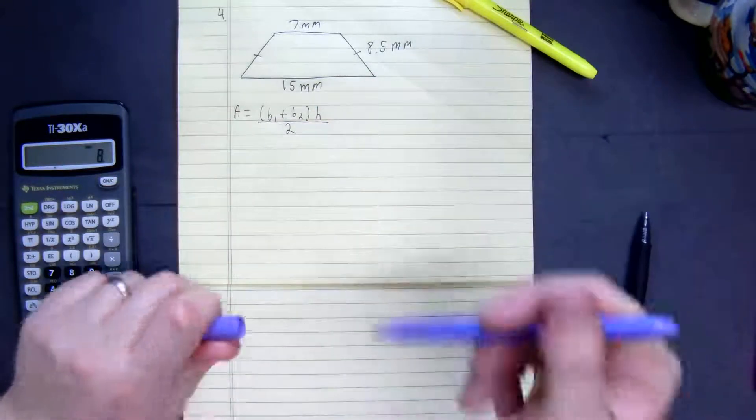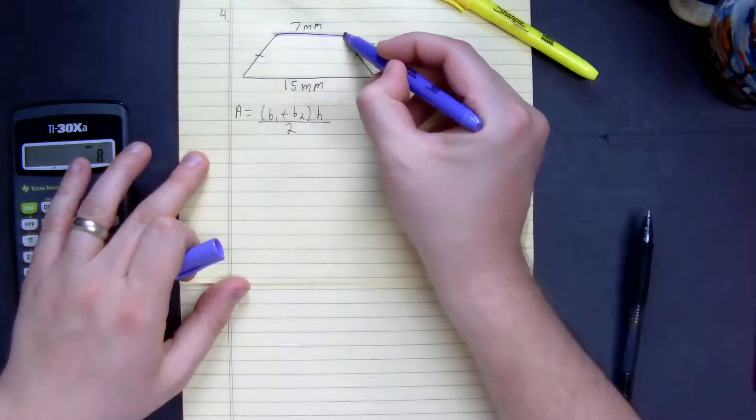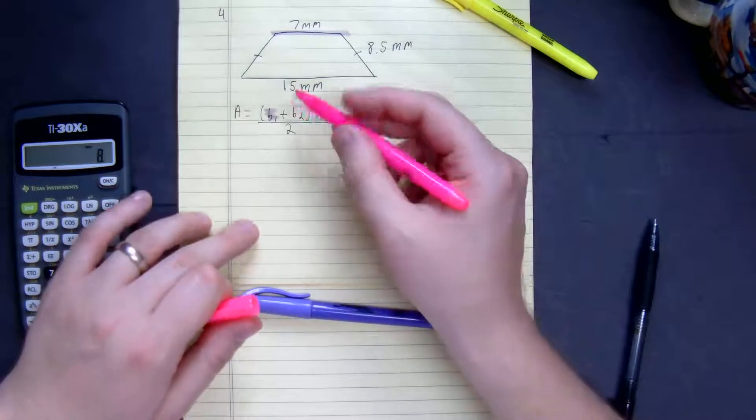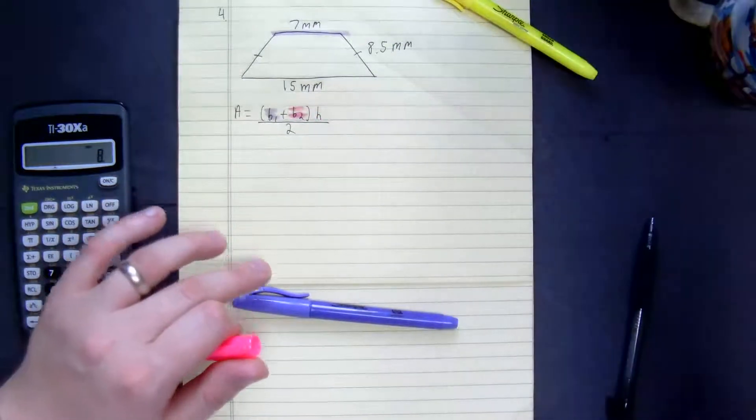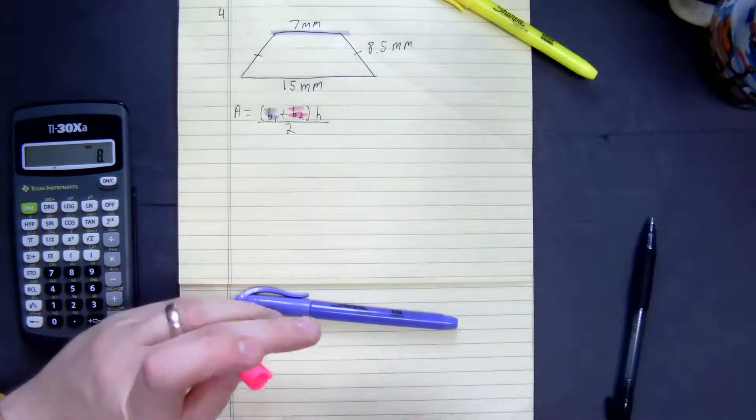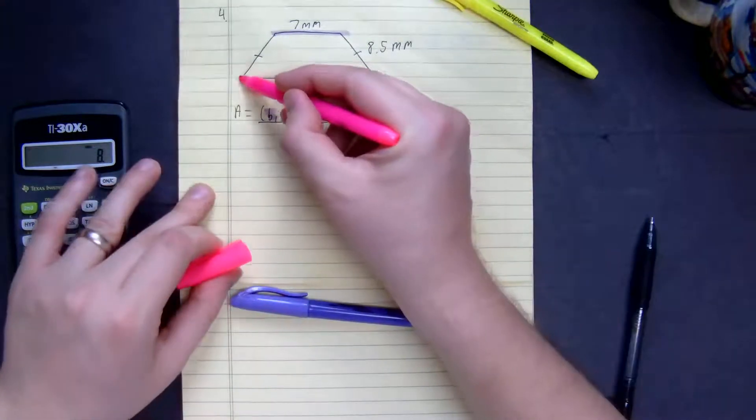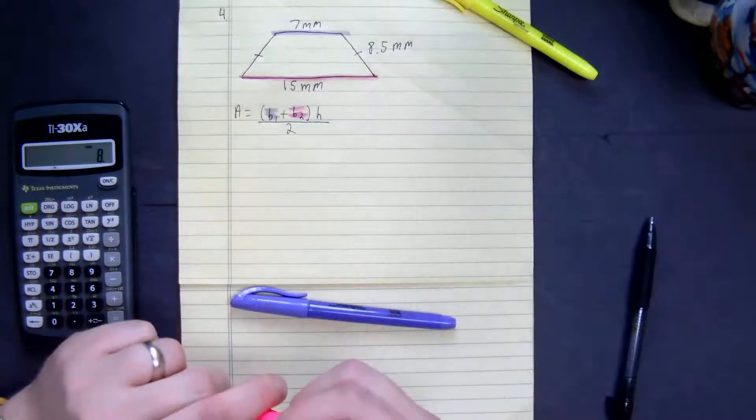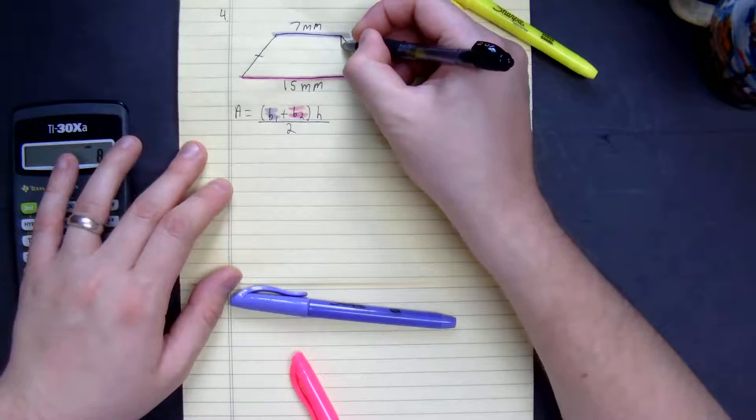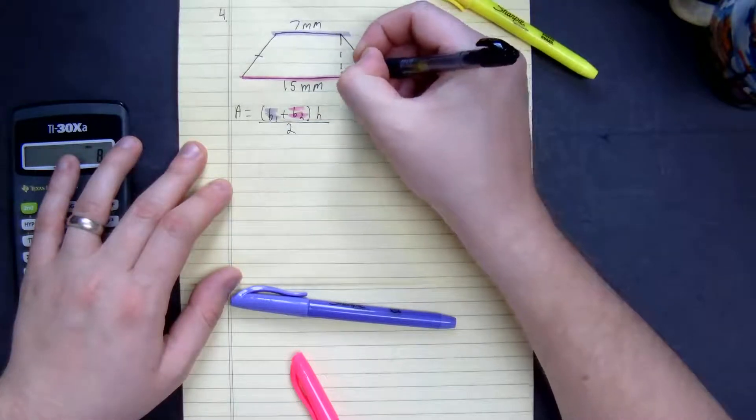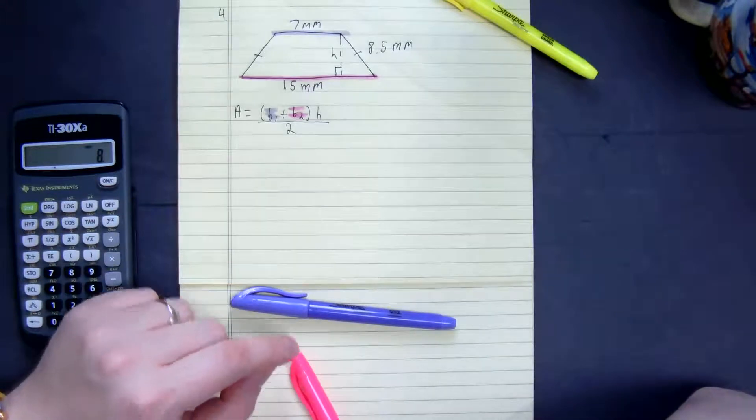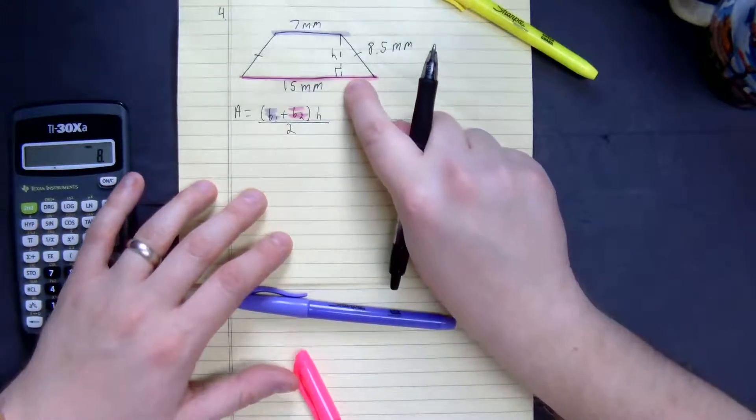If I were to identify the various parts, base 1, we have base 2, and then one thing we're missing is our height. We don't have a height, so I'm going to represent our height going down here. Now, represent our height, but there's an issue with this problem. We don't know the distance between this part.